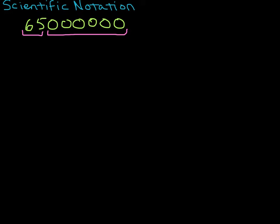So let's go ahead and put this number in scientific notation. What I'm going to do is pretend that there's a decimal place here. And I'm going to move the decimal place to the left until I have only one number before the decimal place. So one, two, three, four, five, six, seven. That's 6.5.